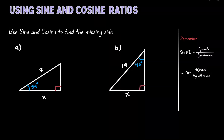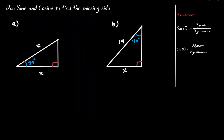Welcome. Let's discuss how we can use the sine and cosine ratios. One application of the sine and cosine ratios is to find the sides in a right triangle. Let's take a look at the following examples.